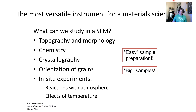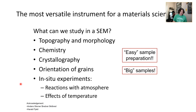The SEM is the most versatile instrument for a material scientist. What can we study in an SEM? Topography, morphology, chemistry, crystallography, orientation of grains — depending on what instrumentation you have. You can perform in situ experiments, reactions with an atmosphere by bleeding gases into the instrument, and observe effects of temperature. Sample preparation is fairly easy — sometimes you just coat with a conductor like gold or carbon. You can put in relatively large samples.